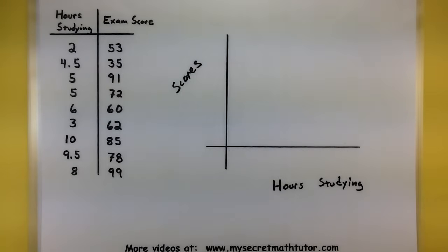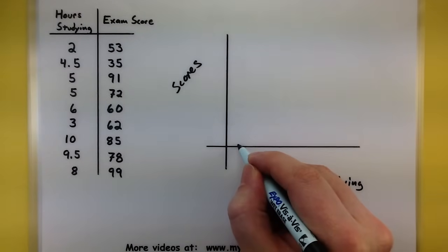There we go. Now it's also important to mark out a scale so we can put all of these data values in here. And looking at the hours of study, it looks like somewhere between 0 and 10 hours is probably good. So let's mark off 10 little tick marks.